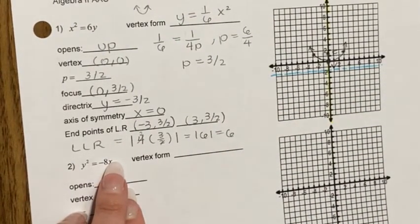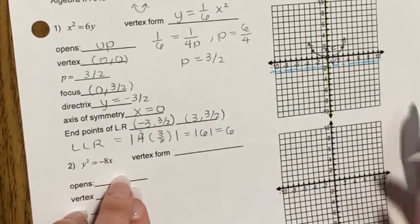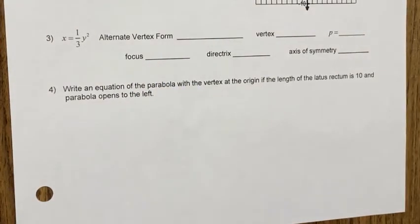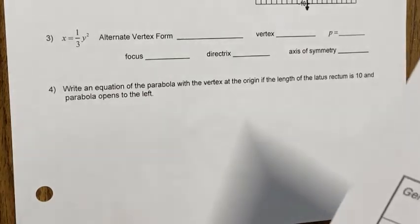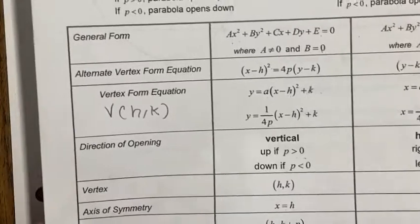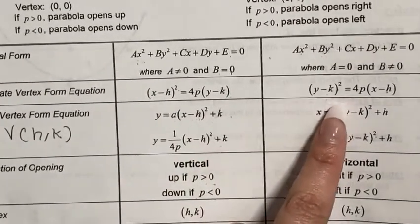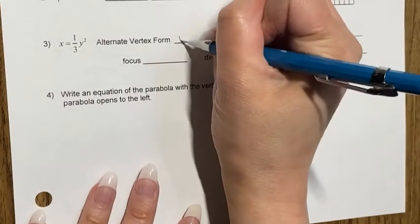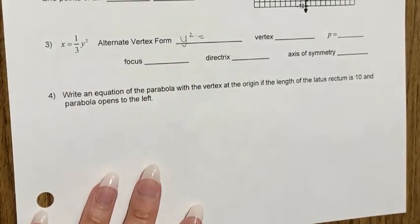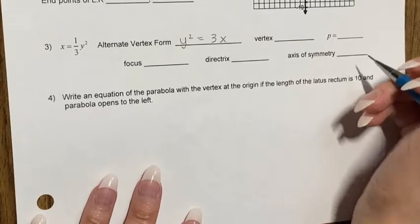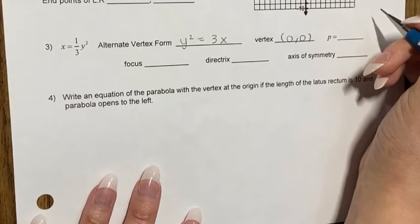Example: find the alternate vertex form. The alternate vertex form is either (x − h)² = 4p(y − k) or (y − k)² = 4p(x − h). Since the vertex is at the origin, we don't have the minus h or minus k terms. Cleaning up for y² gives the alternate vertex form, with vertex (0, 0).